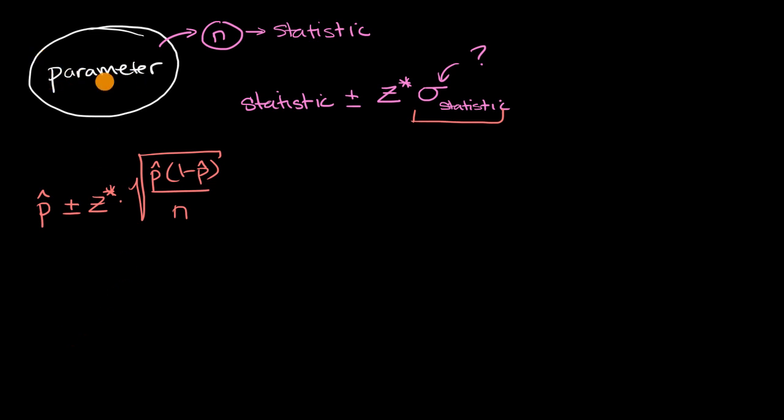If the parameter we're trying to estimate is the population mean, then our statistic is going to be the sample mean. So in that scenario, we are going to be looking at our statistic is our sample mean, plus or minus z star.